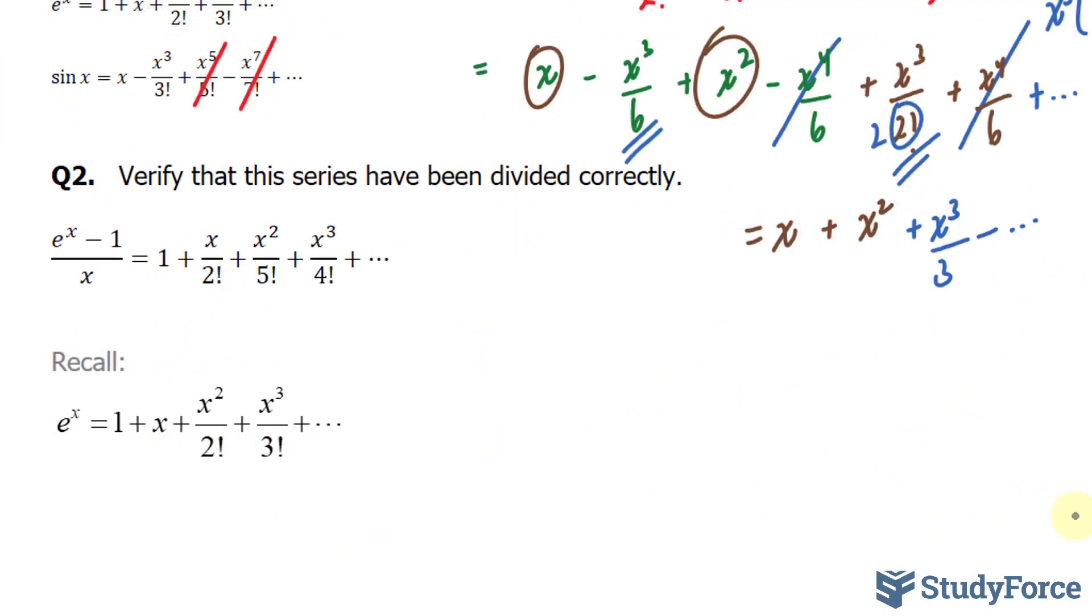In question number 2, we're expected to verify whether this series has been divided correctly. So we have e to the power of x minus 1 over x is equal to the following. Let's figure this one out.